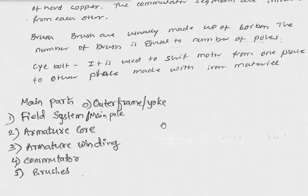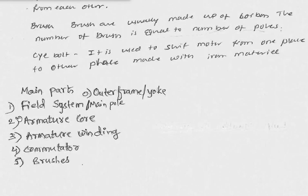The main parts are: outer frame/yoke, field system or main pole, armature core with armature winding, commutator, and brush. The commutator is made of hard copper and commutator segments are insulated by mica. The brush is made of carbon and rests on the commutator segment using a spring arrangement to maintain firm contact.